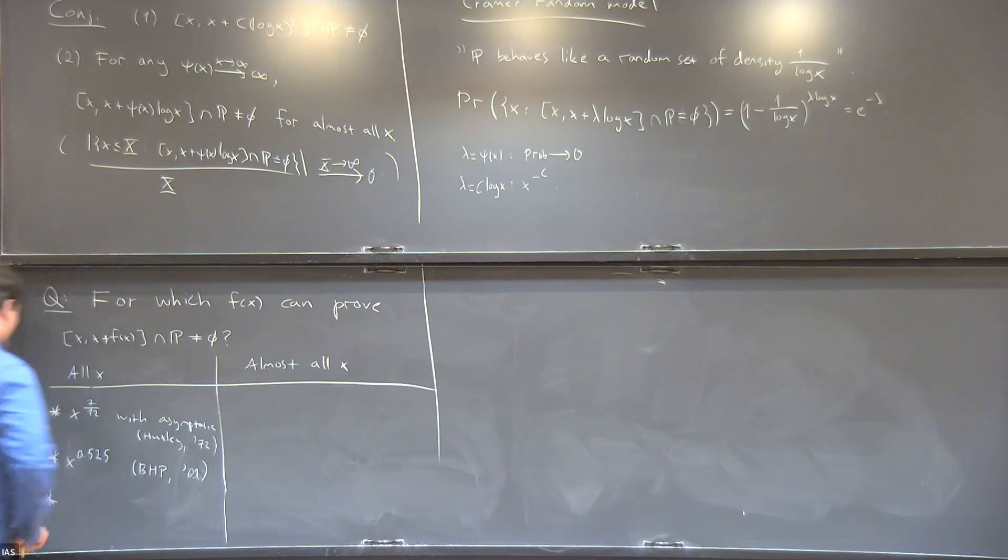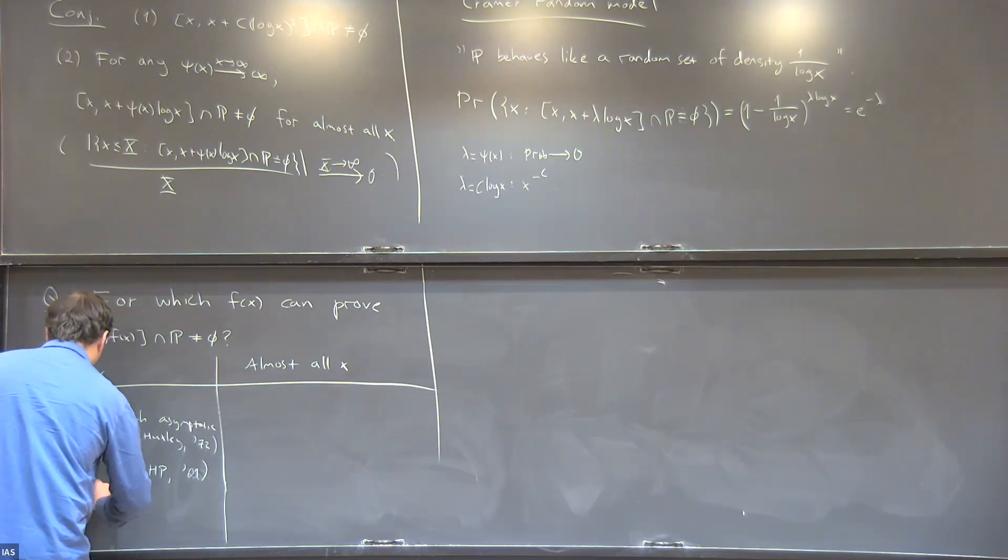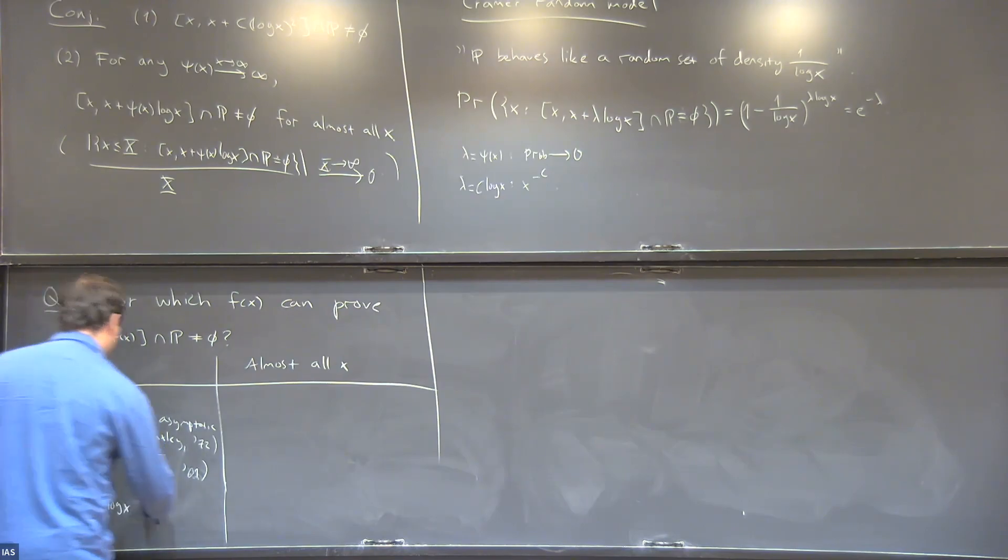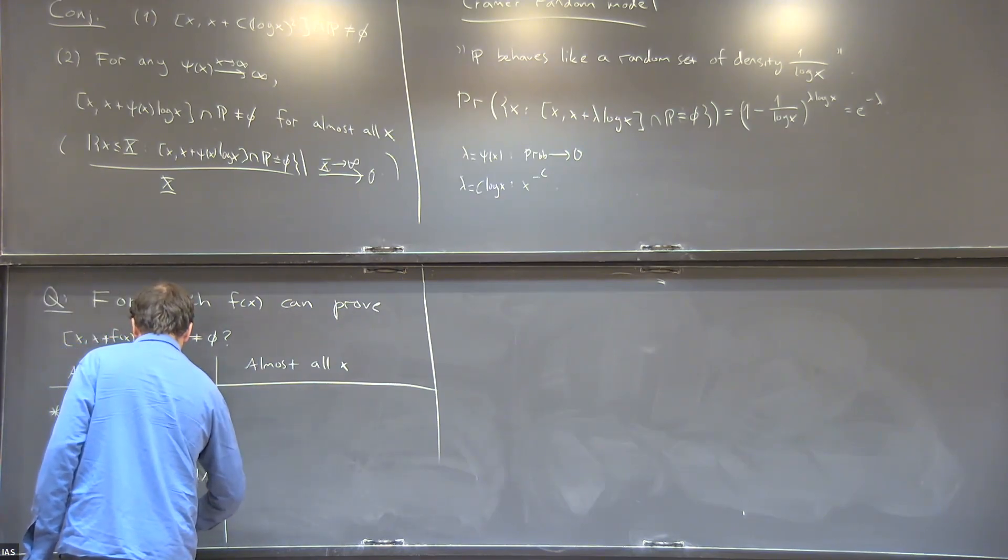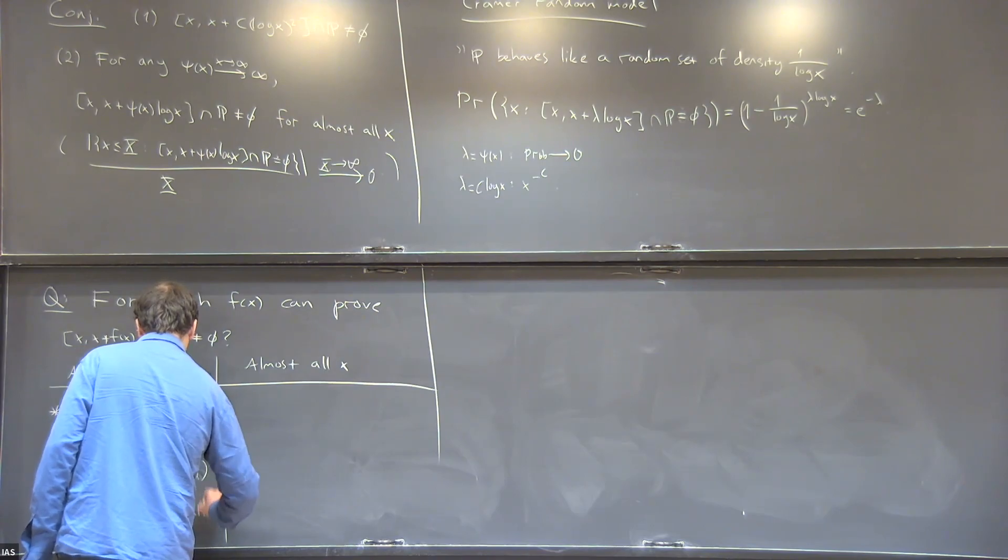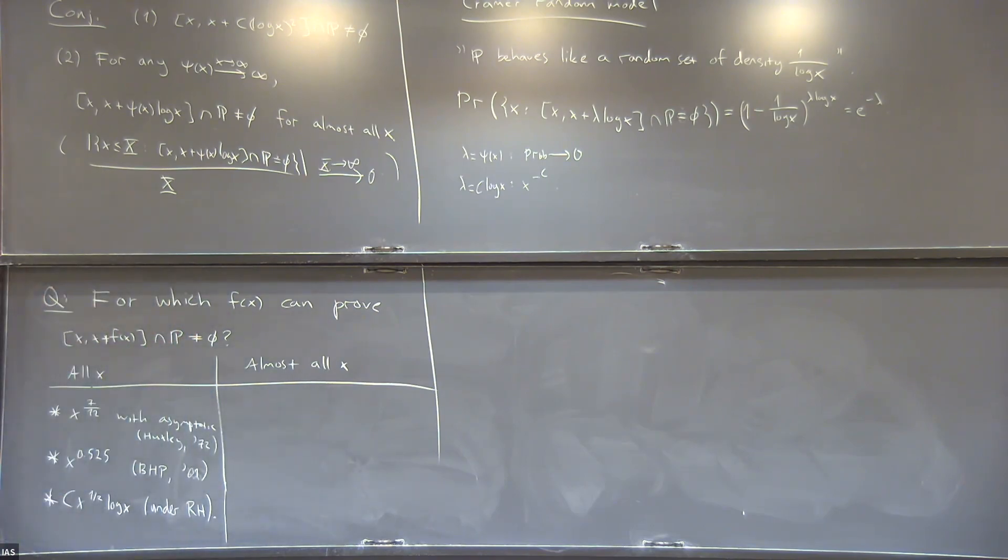I can also ask what about under the Riemann hypothesis. And then the best known interval length is X to the one half times log X. So this is under the Riemann hypothesis. Even under RH, we're nowhere near the prediction that Cramér made about the interval length.